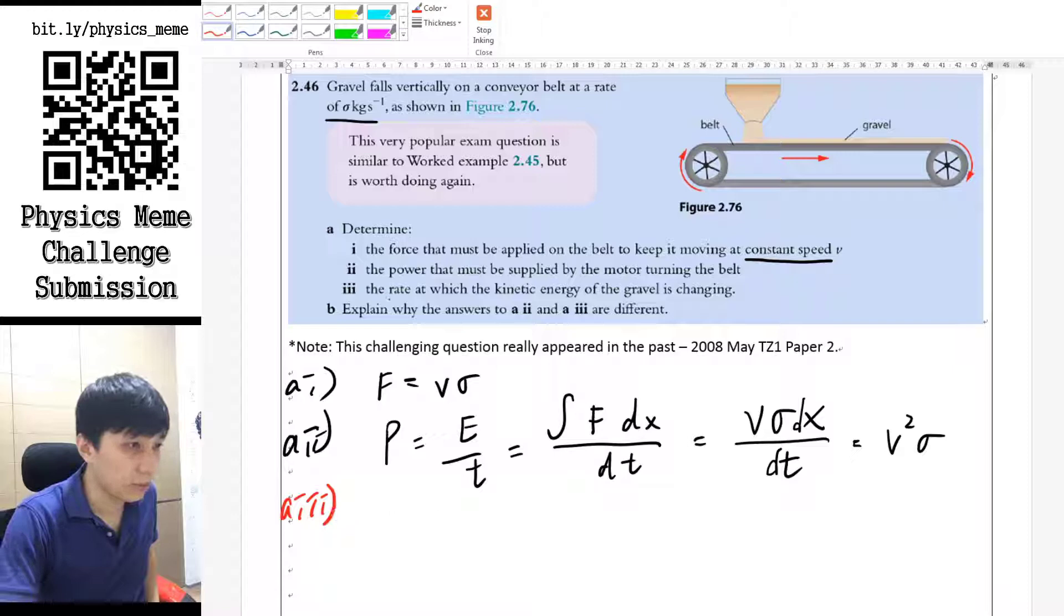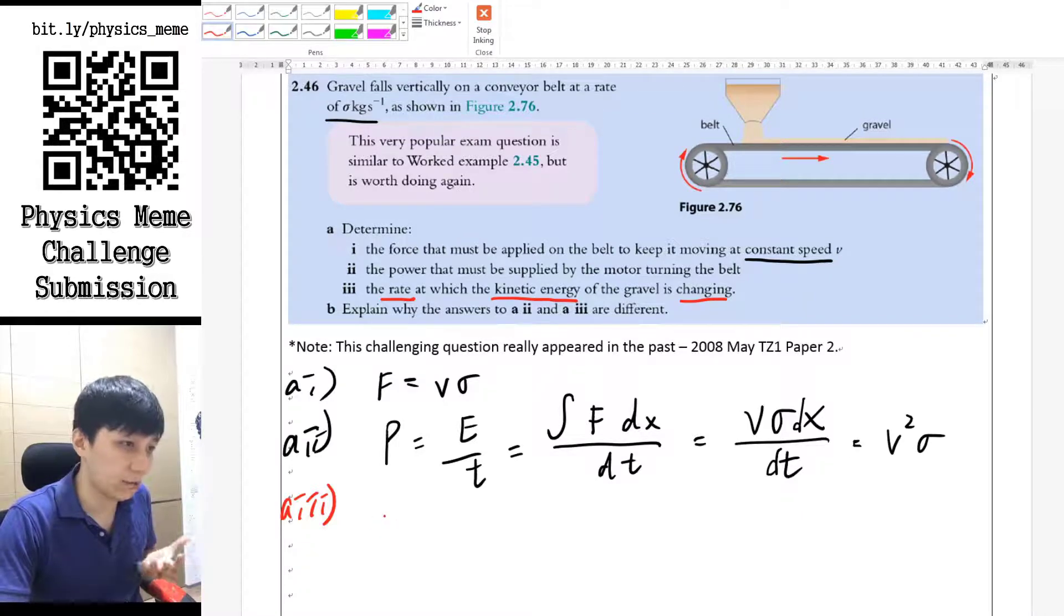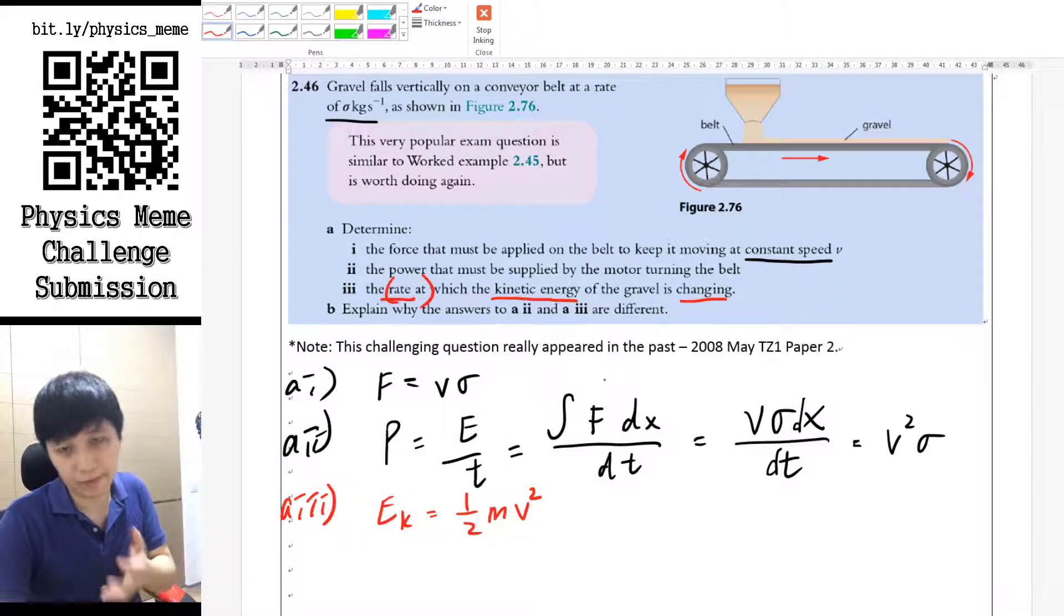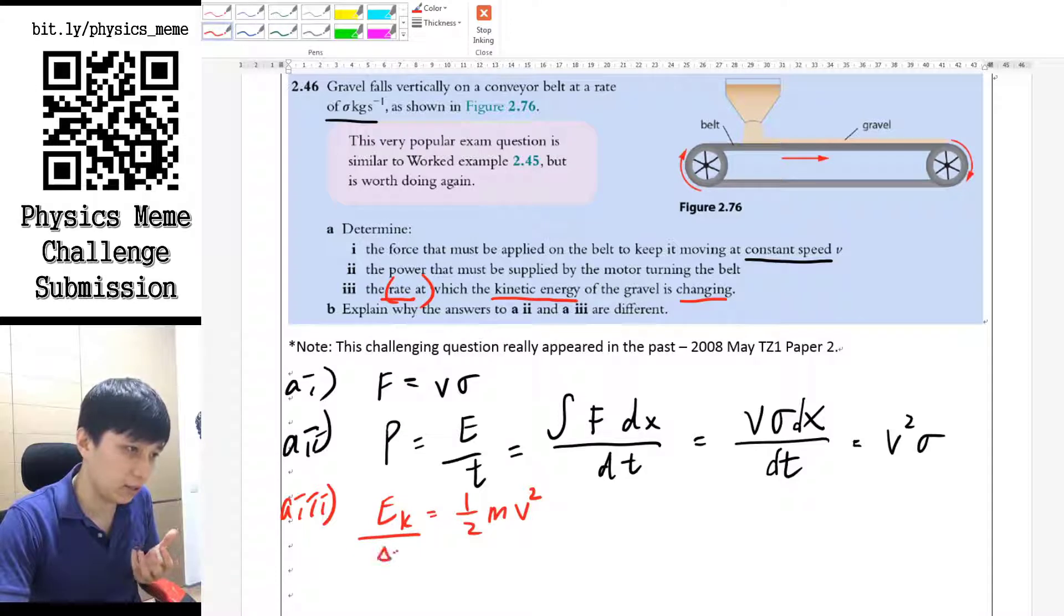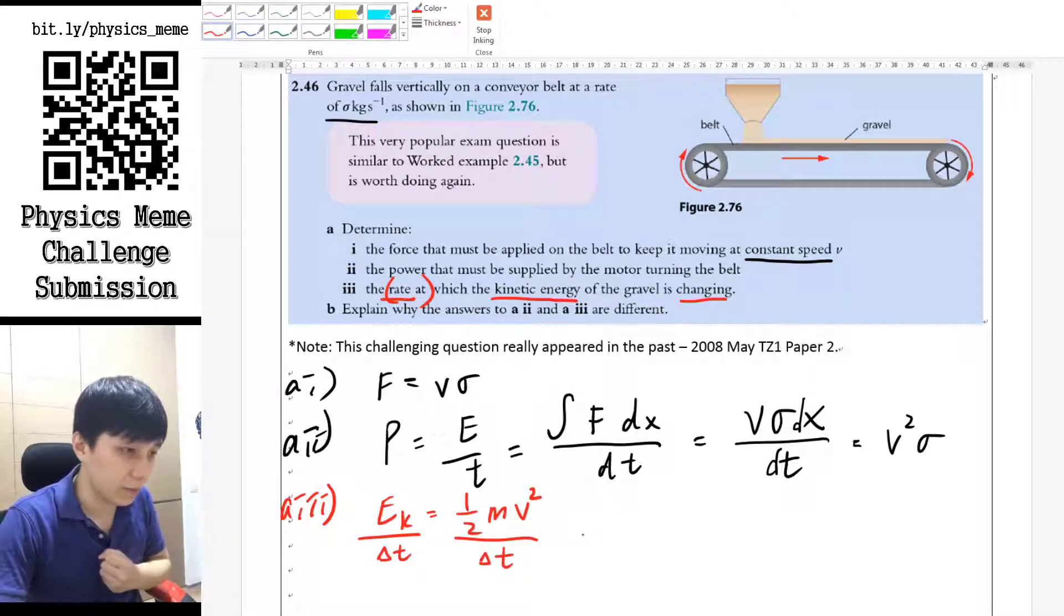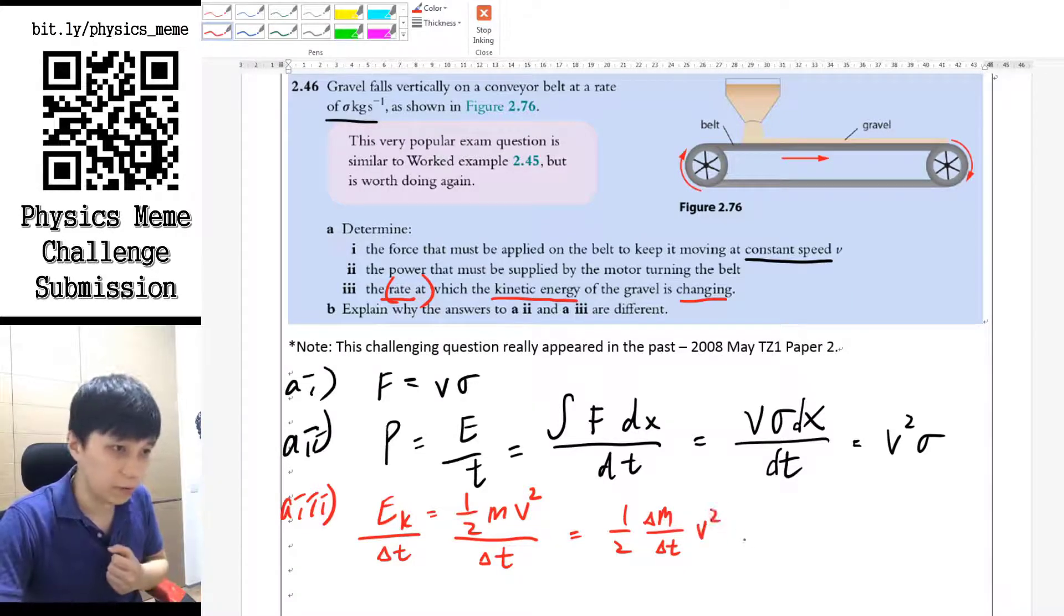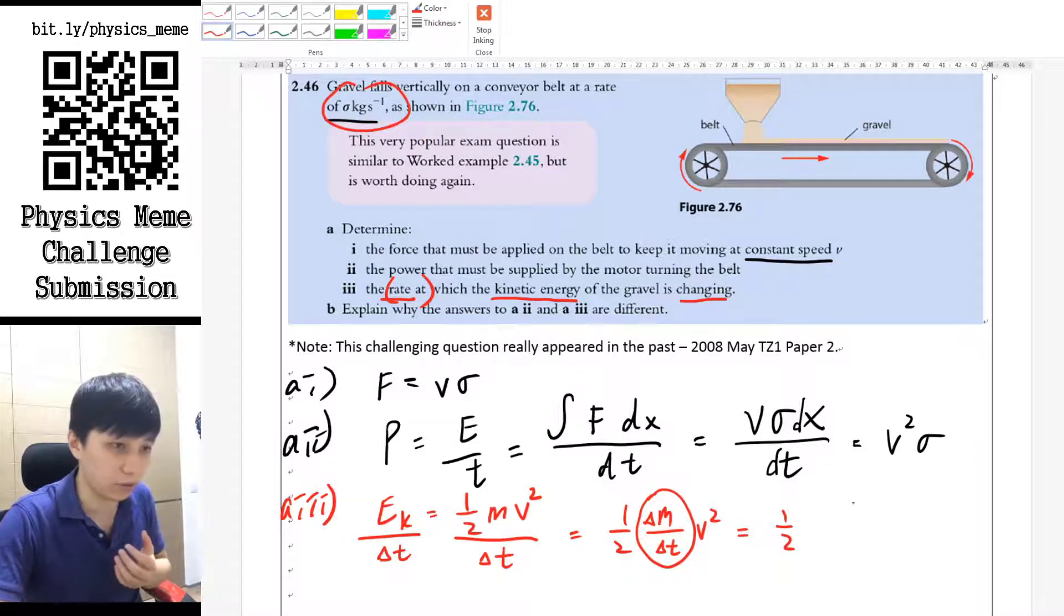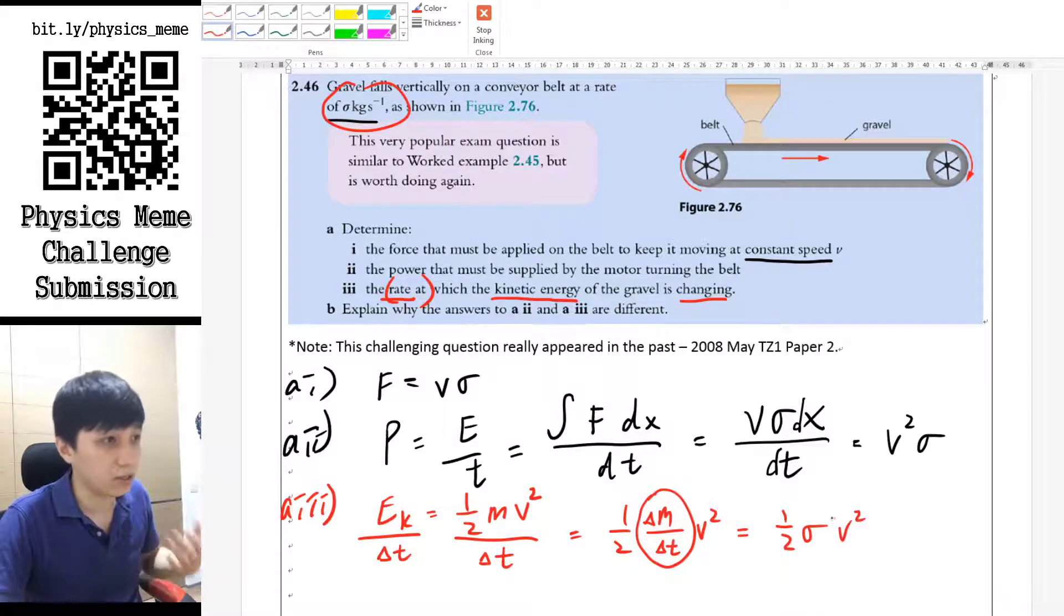For part a3, he's asking you about the rate at which kinetic energy is changing. So that means you don't just calculate kinetic energy, because kinetic energy is half mv squared. But the rate of it, whenever you see the word rate of something in physics, it simply means it is divided by the change of time. Or you can again take the calculus idea dt more precisely. So then what you have is simply half m over delta t, or you may say delta m also, v squared. And that actually means, because delta m over delta t is simply the rate of mass, which is provided by the question, again sigma v squared.